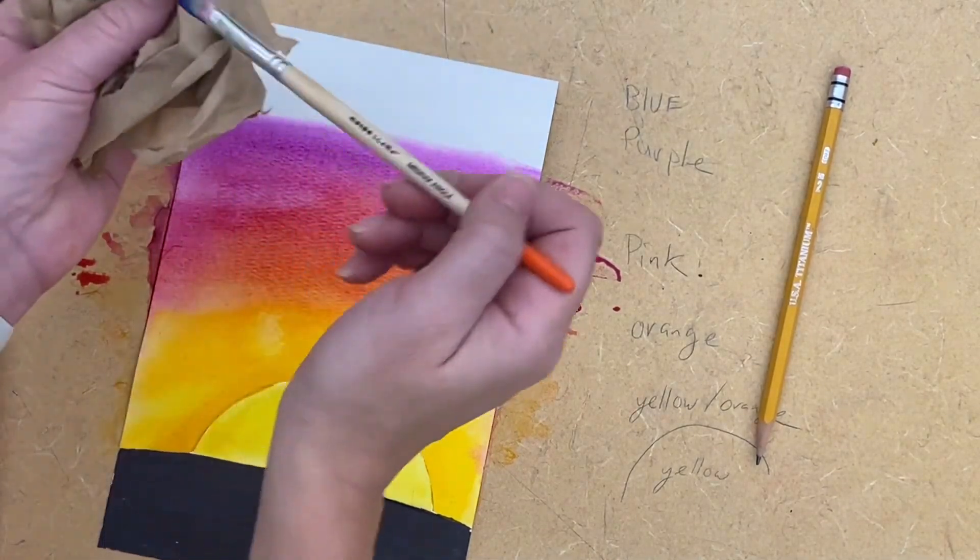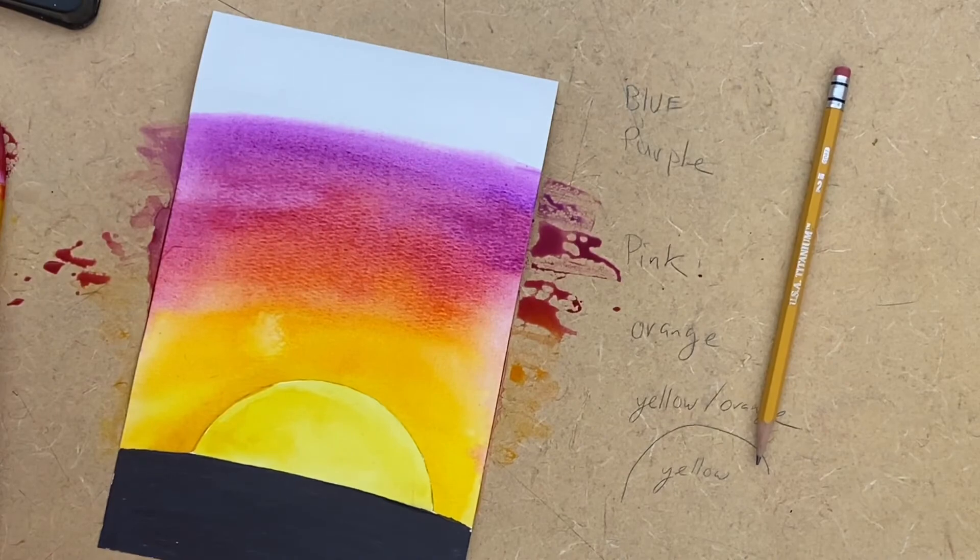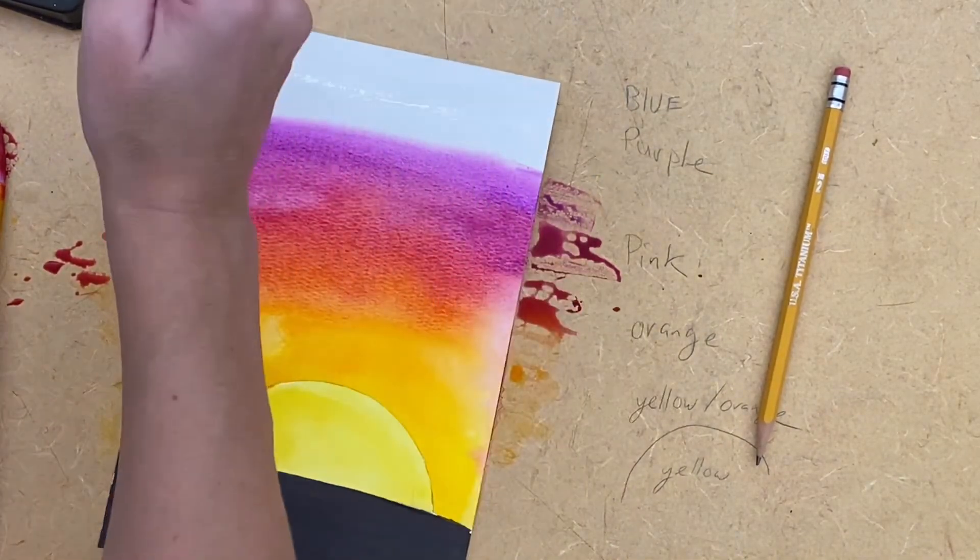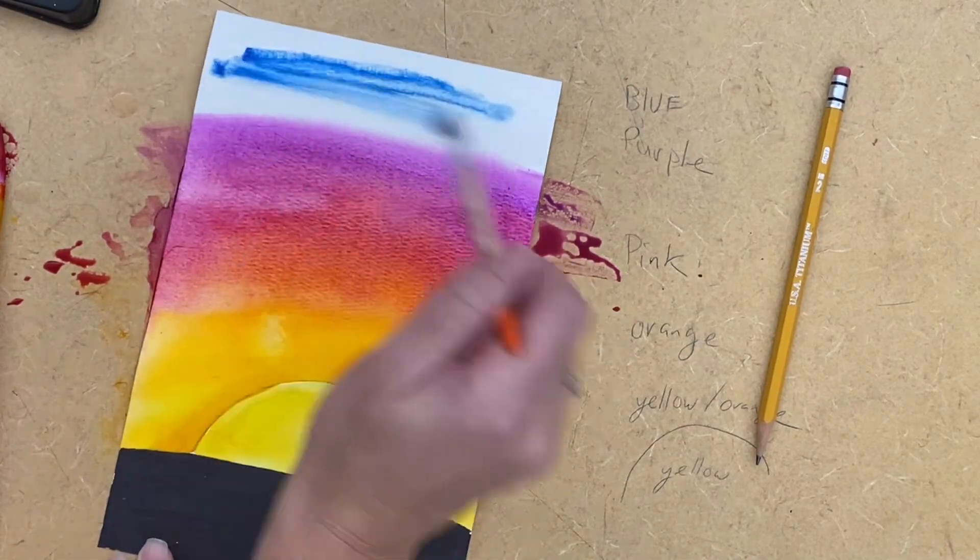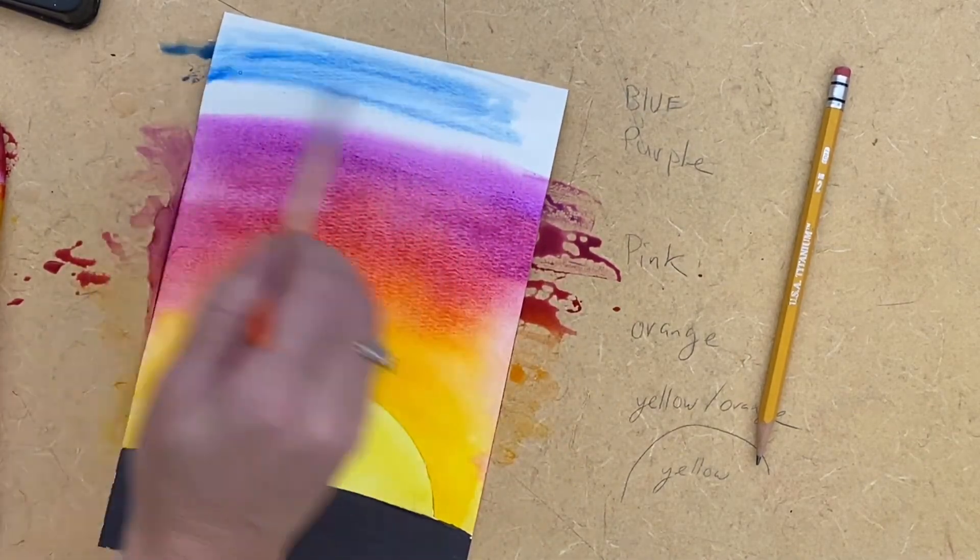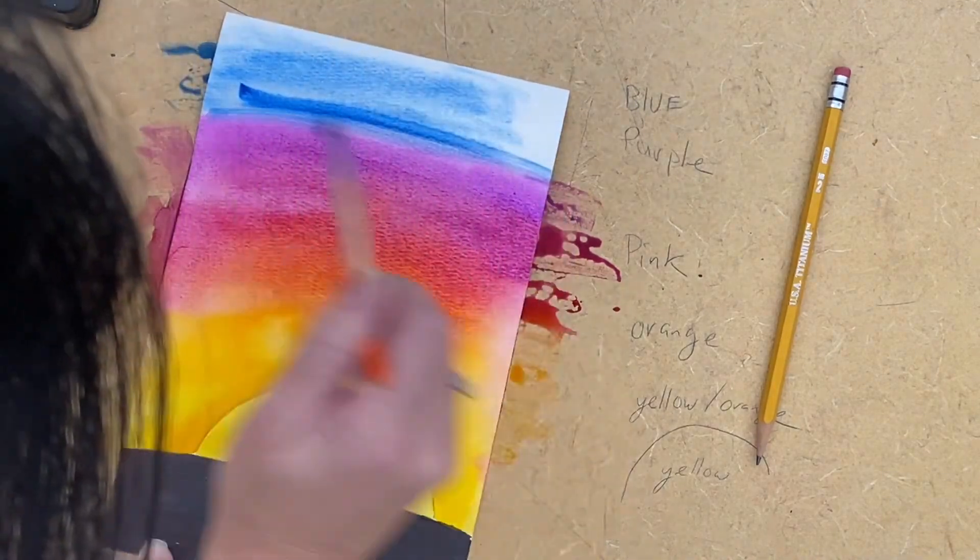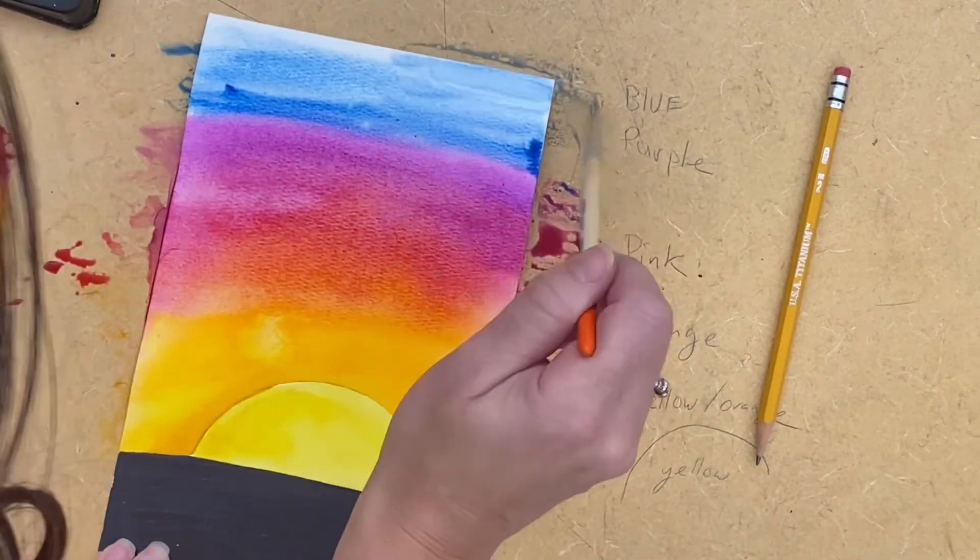Actually, this is more of a blue. Yeah, let's do that one. I'm going to lay the water down just to make sure it's not drying on me. I'm going to try to keep that blue light because I do not want it to look too dark. Just like a sky.